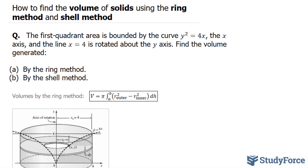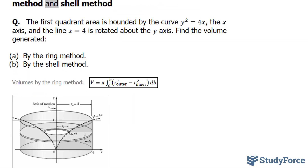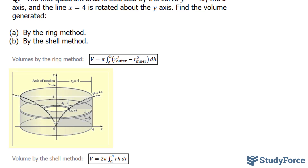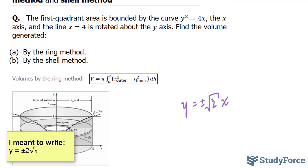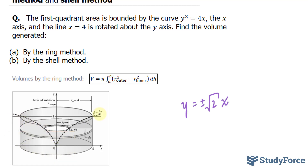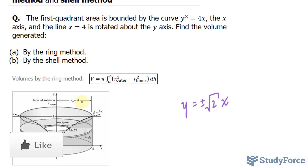The ring method is shown right here, and what I have is an illustration of the function y equals plus or minus the square root of 2 times x. What I've done is isolated for y and end up with this, and if you graph this function you'll end up with two curves. They're asking for something very specific — they want it between 0 and 4, within the first quadrant, and it's being rotated about the y-axis.